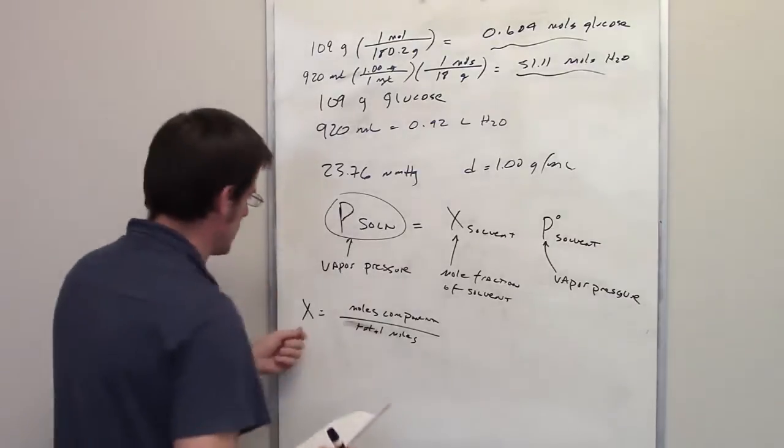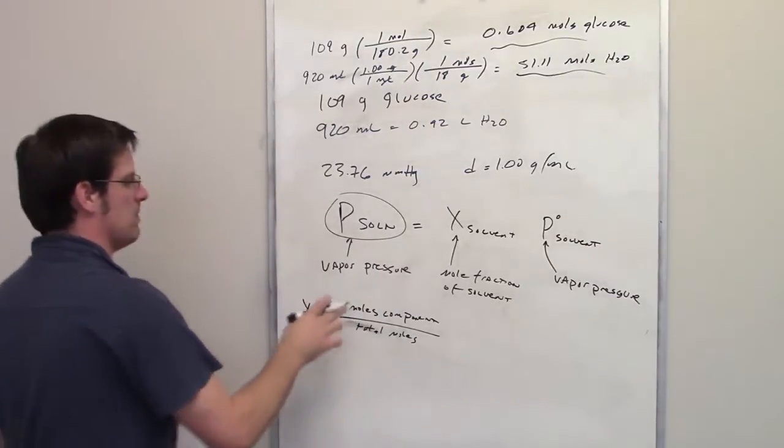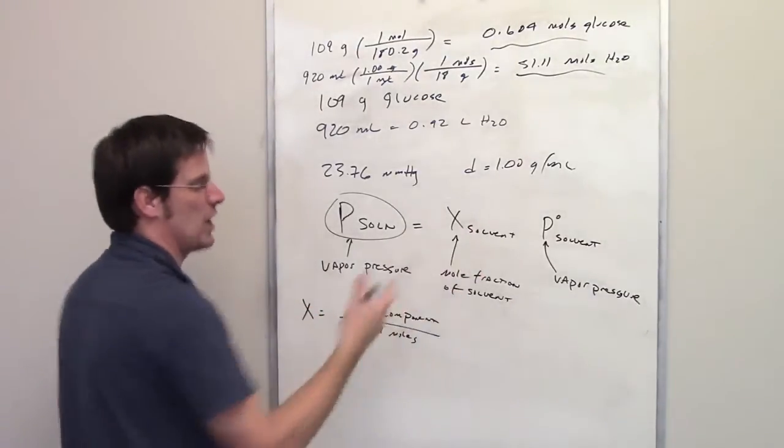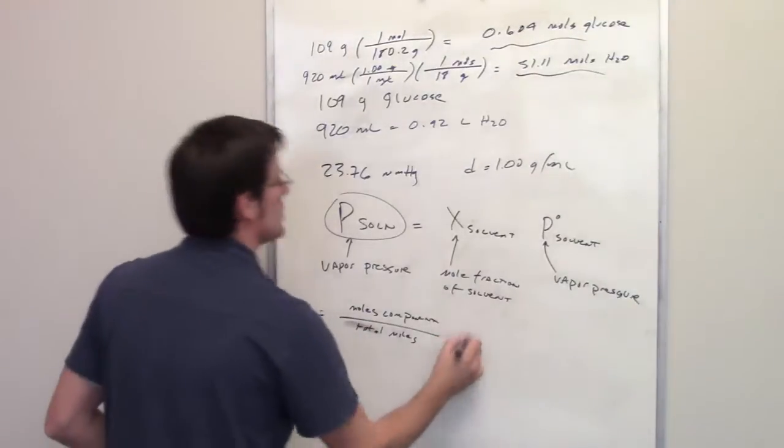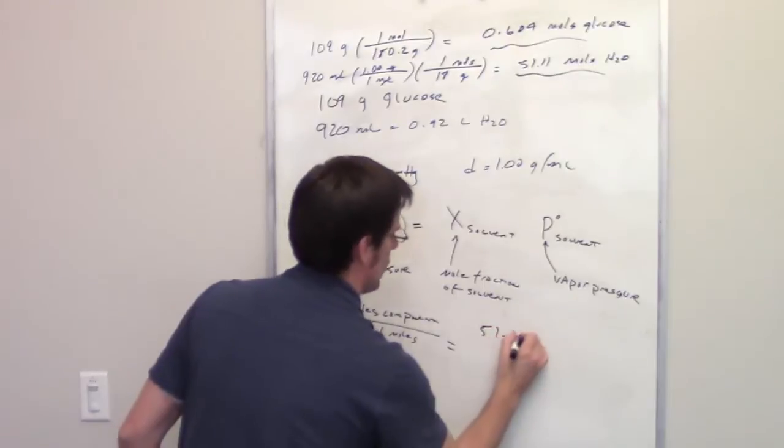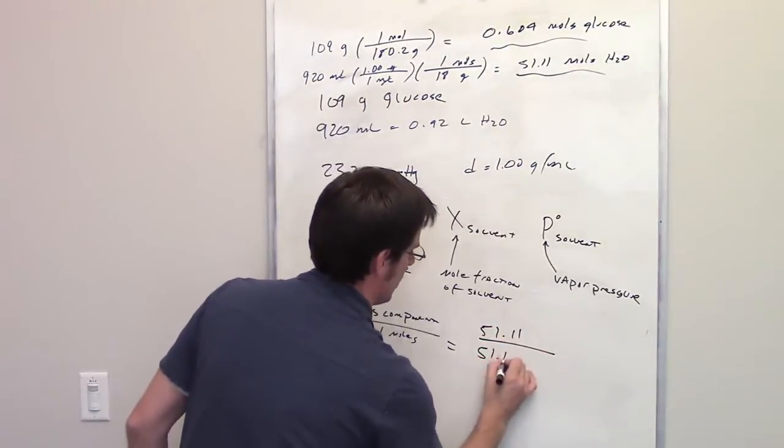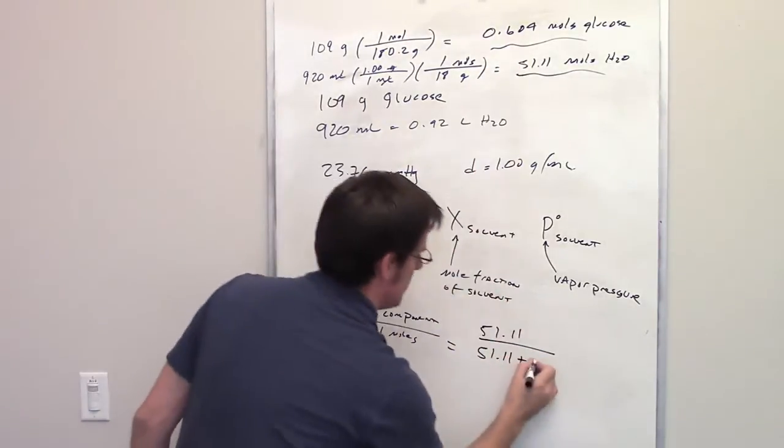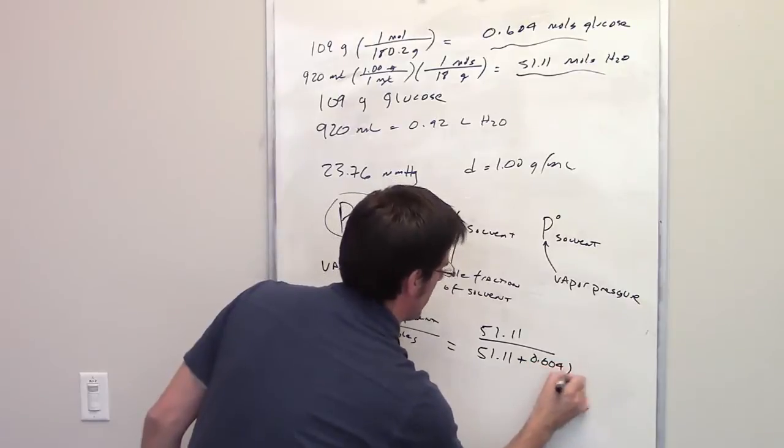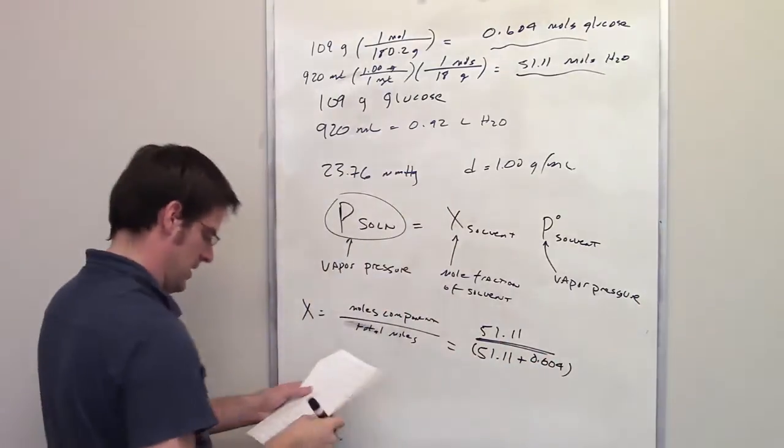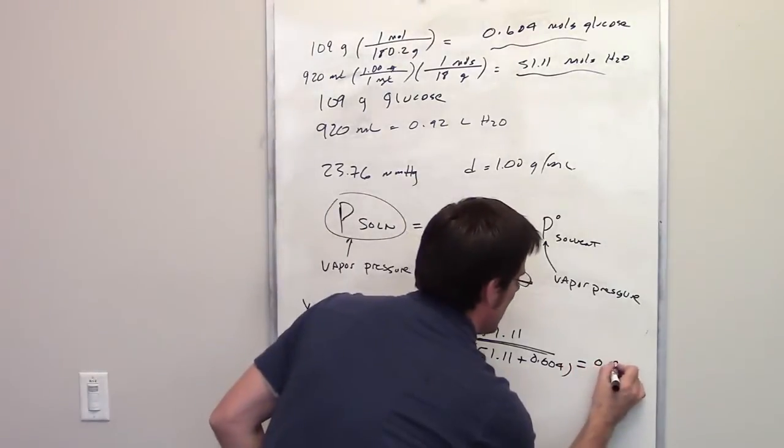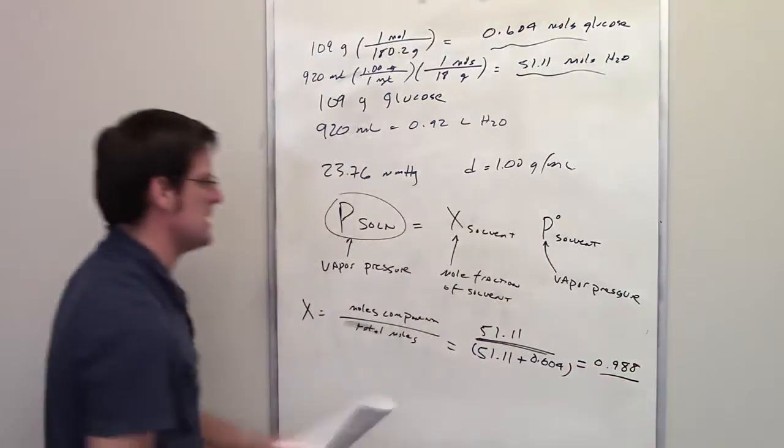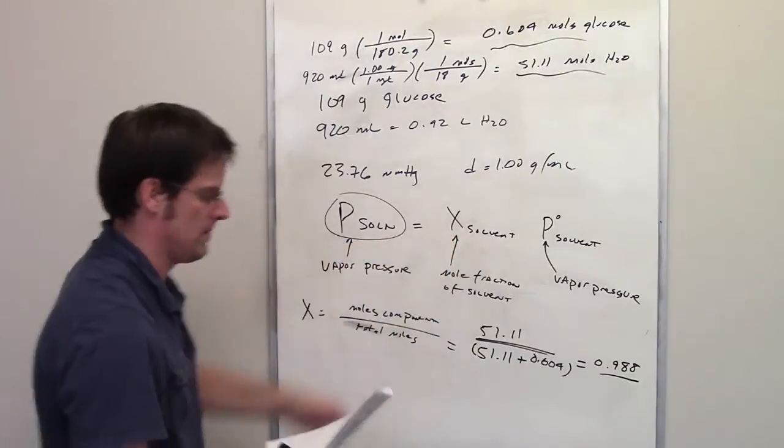To determine the mole fraction of water, the solvent, that's going to be 51.11 divided by 51.11 plus 0.604. You throw that in your calculator, you end up getting 0.988 as the mole fraction of water.